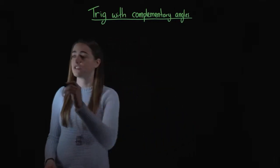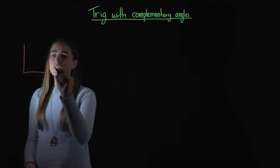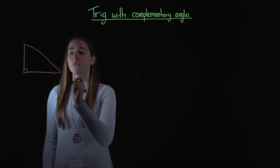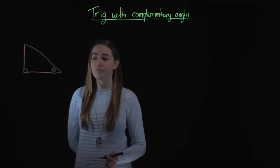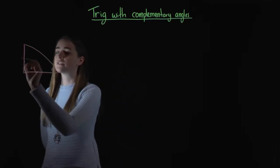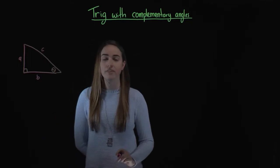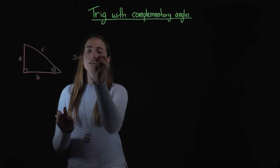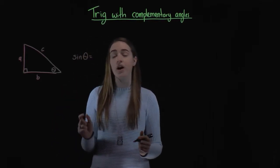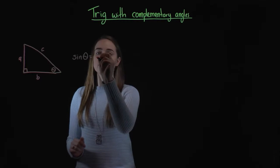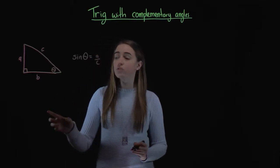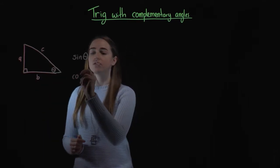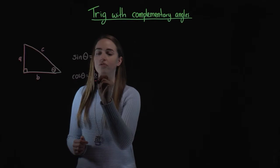Let's have a look at a right angled triangle. We've got this right angled triangle here, with our right angle there, and we're going to call this angle down the bottom theta. Let's label our sides as well — let's call them a, b and c. From the trig that we've already learnt, we know that sine of theta equals the opposite over the hypotenuse, so in this triangle that would be a over c. We also know that cos of theta would be the adjacent over the hypotenuse, so cos of theta would be b over c.